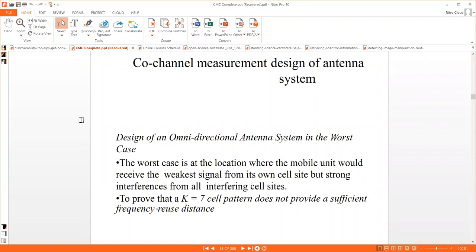If we take one area in a particular cell site, for example it may be our college building, if there is a weak signal and suddenly there are some interference noises or cross connections, then that particular zone is referred as the worst case.